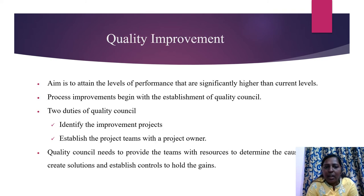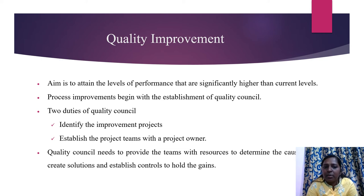In quality improvement, our aim is to attain the level of performance which is much higher than the current level. The process improvement begins with the establishment of the quality council. The quality council has two duties: the first duty is identifying the improvement projects, and the second is to establish the project teams based on the project owner. The teams are provided with the resources to determine the correct cause, create solutions, and further establish the controls to hold the gains.